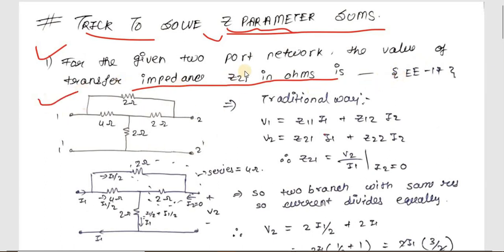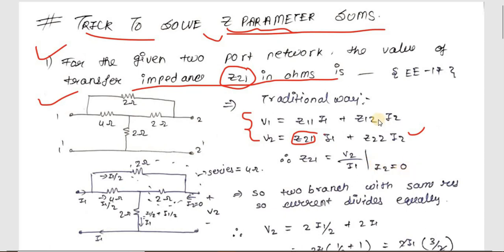The network is given and you have to find out the value of Z21. The traditional way to solve this is to write the Z-parameter equations: V1 = Z11·I1 + Z12·I2, and V2 = Z21·I1 + Z22·I2. Since we want Z21, it is defined as V2 divided by I1 when I2 equals zero. We will see the trick later; for now this is the traditional approach.